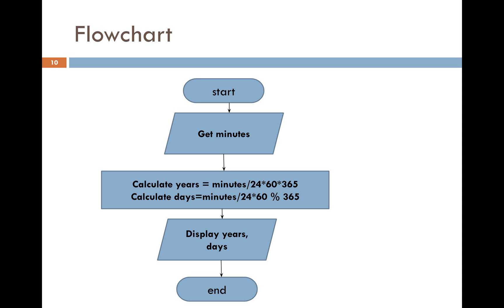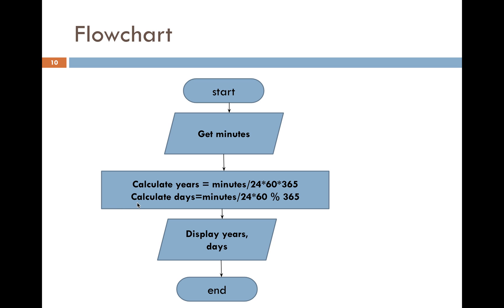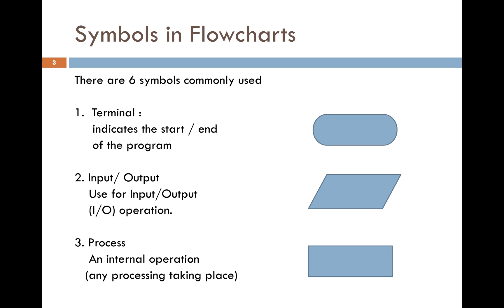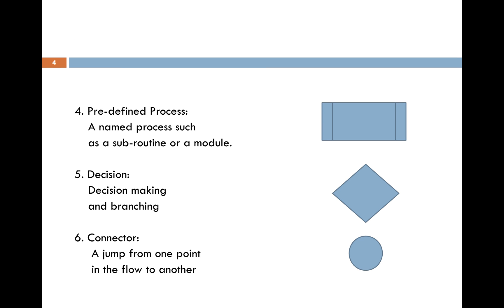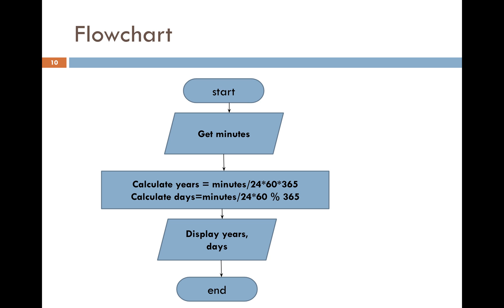To summarize: a flowchart is a graphical illustration. The main symbols are symbol one for start and end, symbol two for input and output, and symbol three for process calculations. We discussed sequence in this session and will look at decision making in future sessions. We only have six symbols in total, so if you practice them again and again you will get used to them.